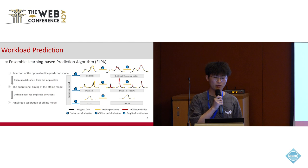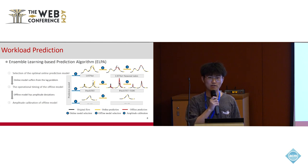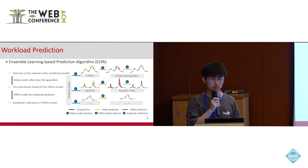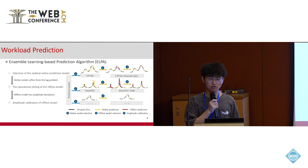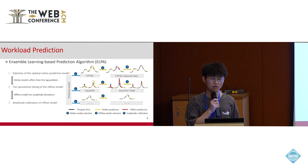PaaS's workload prediction algorithm, ERPA, which is based on ensemble learning, consists of three steps. The first step involves the selection of the optimal online prediction model. We test several online prediction models using the application's recent workload data, and the model that provides the best performance is chosen as the base. The second step addresses the lag problem of online models. We identify sudden workload increases by monitoring the slope of the load curve. When it exceeds a certain threshold, it indicates a surge, and for the surge period, we employ an offline model to make predictions.